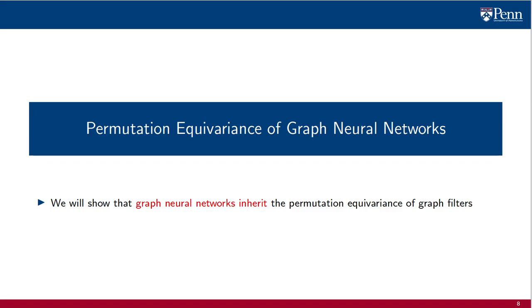We move on to discuss permutation equivariance of graph neural networks. We will show that GNNs inherit the permutation equivariance of graph filters.